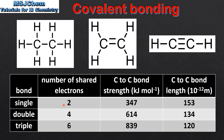In a single covalent bond there are two shared electrons. In a double bond there are four shared electrons. And in a triple bond there are six shared electrons.